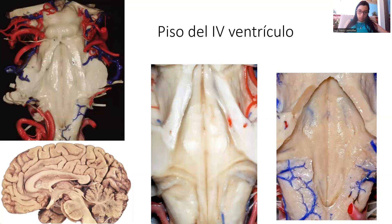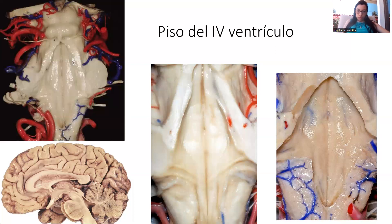The vagus triangle is called the gray wing and the hypoglossal triangle the white wing. Together with the area postrema, which is lateral to the vagus triangle and rostral to the obex — the obex being the inferior border of the floor of the fourth ventricle — the hypoglossal triangle, the vagus triangle, and the area postrema form the calamus scriptorius.